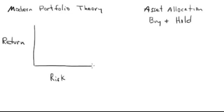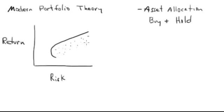There is what's called an efficient frontier, and there are all these different asset classes and types of investments you can choose. The point is you can design a portfolio through asset allocation — you can have the exact same return, but with less risk, by optimizing it using this efficient frontier concept.